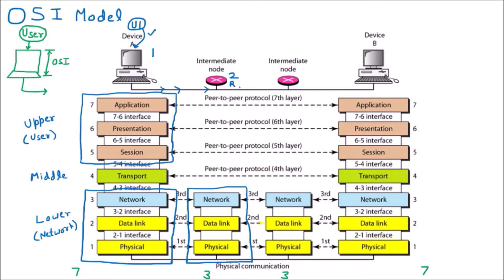Data is moving further from one router to another router. We have device three where one more router is present, and a router is a network device that works on the lower layers. So obviously only the three lower layers are required here.